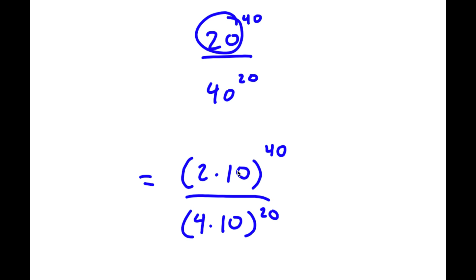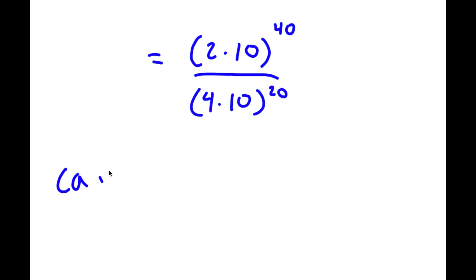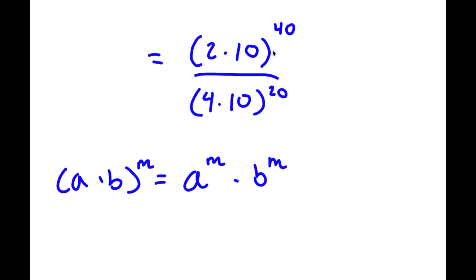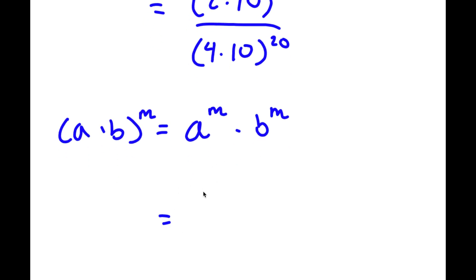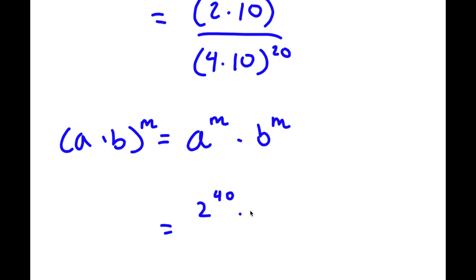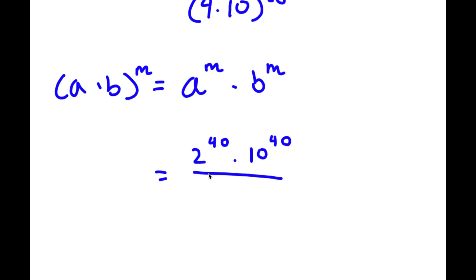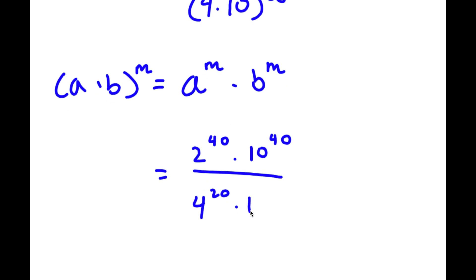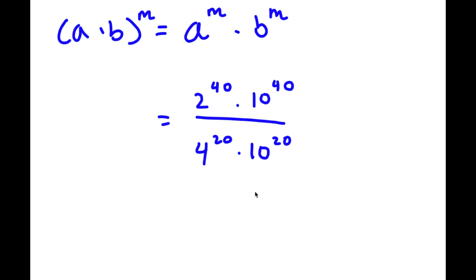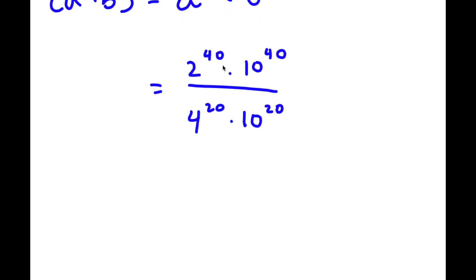Now, if I have something in the form A times B to the power of n, this is equal to A to the power of n times B to the power of n. So 2 times 10 to the power of 40 I can rewrite as 2 to the power of 40 times 10 to the power of 40. And 4 times 10 to the power of 20 I can write as 4 to the power of 20 times 10 to the power of 20. So now I have 2 to the power of 40 times 10 to the power of 40 over 4 to the power of 20 times 10 to the power of 20.